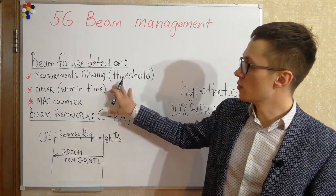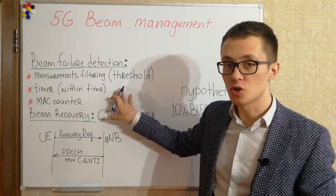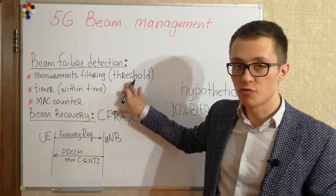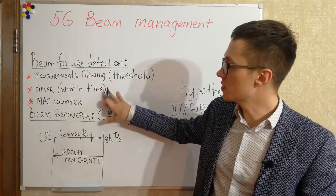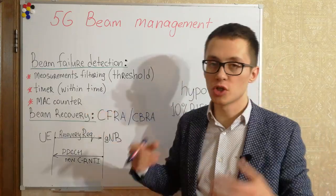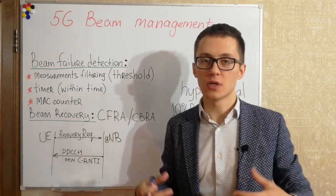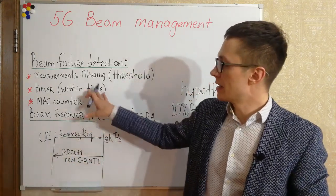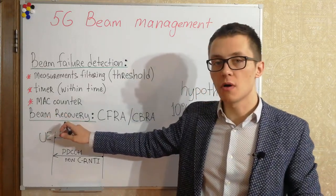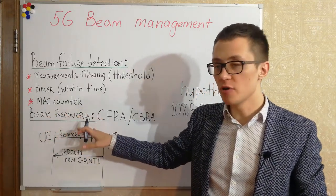Three conditions must be met for the system to determine a BIM failure: quality of signal must be lower than the threshold, within a special time window, and this must occur not just once but multiple times — it can be two, three, or four times, as configured. Only after this does user equipment start the BIM failure recovery procedure.